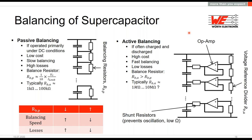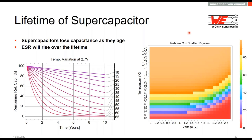Supercapacitors lose capacitance and their ESR increases as they age. We have a very good overview of this topic through our tools for calculating the lifetime of our supercapacitors. This is shown in two diagrams: the left one shows the remaining capacitance after 10 years depending on operating temperature, and the right diagram shows the same information more sophisticatedly, also taking the applied voltage into account.